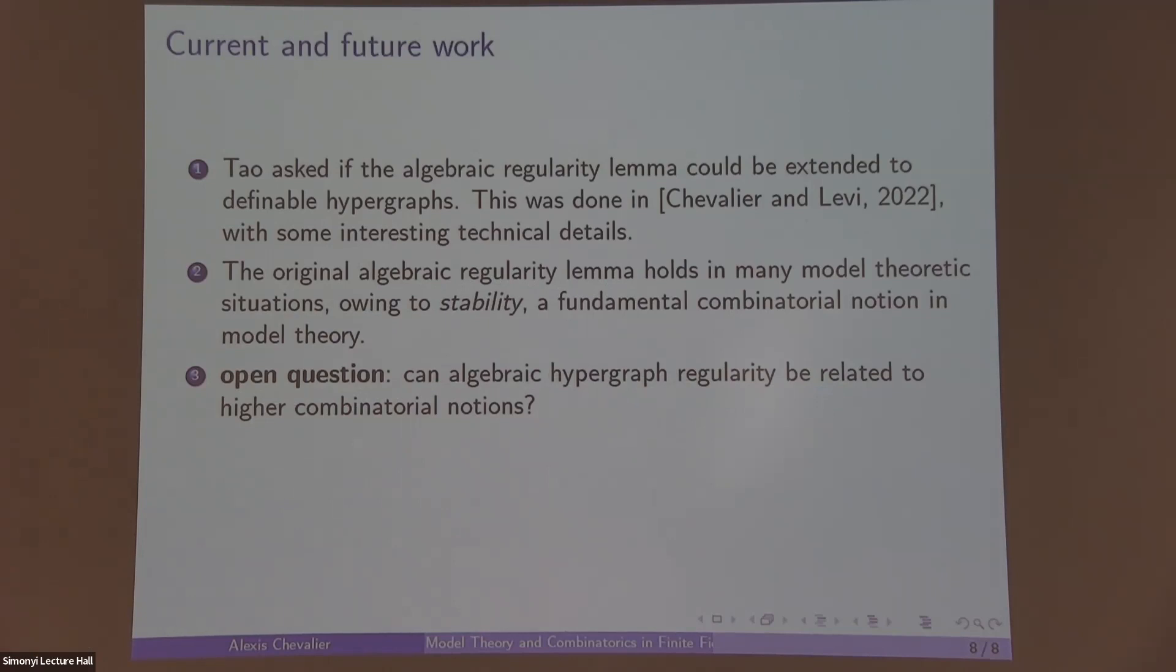This is a very natural project in model theory. There's already been quite a lot of work on Szemerédi hypergraph regularity and higher combinatorial notions. For example, Artem Chernikov and Henry Towsner and others studied NIP and higher NIP properties with hypergraph regularity. Julia Wolf, Caroline Terry, and others are looking for generalizations of stability to hypergraph regularity. And it's still an open question to see how this works with the algebra in the algebraic case because the proof in our paper was very algebraic and not at all combinatorial.